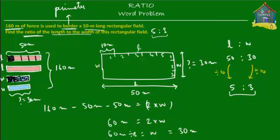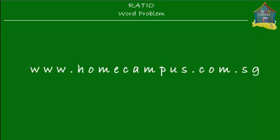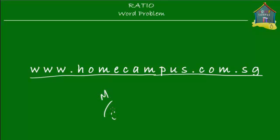In our case, if all five units combined equal 50 meters, then each unit equals 50 divided by 5, which is 10 meters. So the total width equals 10 meters times 3, which is 30 meters — and yes, that's correct. That's the relation between the length and the width: the ratio 5 to 3. I hope you've understood, and I hope you'll go and solve some other word problems. Visit www.homecampus.com.sg — this is M signing off. Bye!